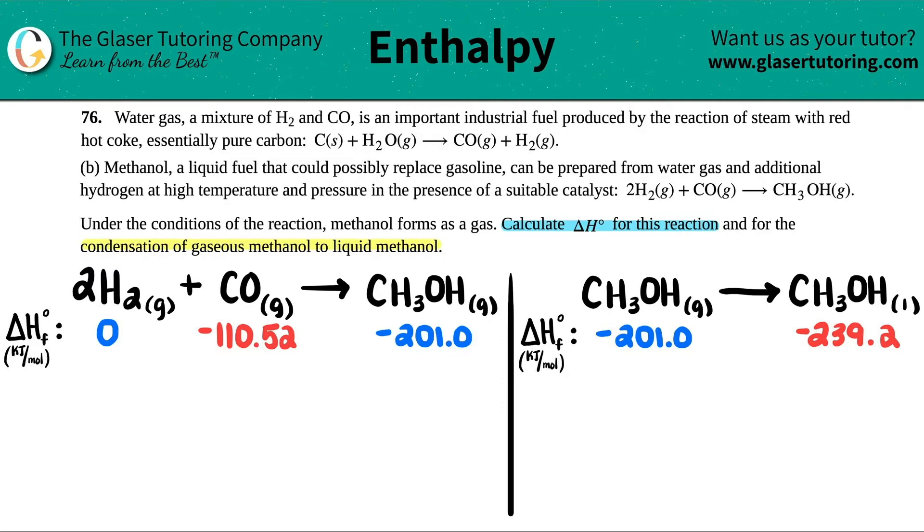We have two equations to do here. We have to calculate the delta H for the reaction shown on the left, and then they want us to also find the delta H for condensation of gaseous methanol to liquid methanol, which is the one on the right. Condensation means we're going from a gas to a liquid.